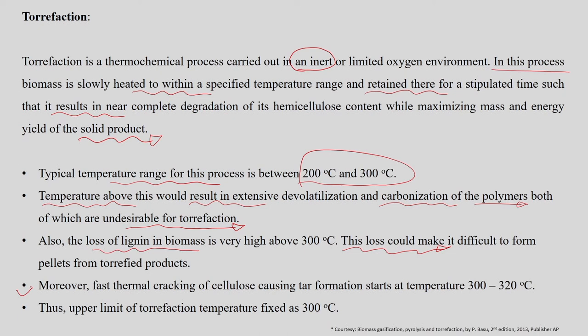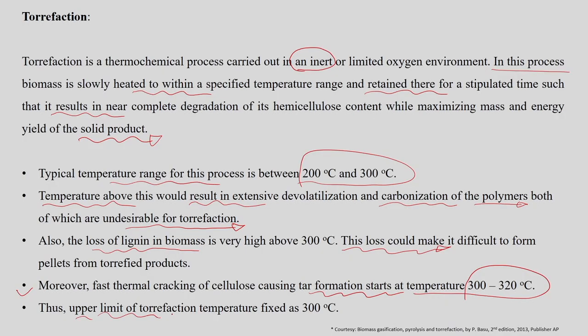Tar formation starts in the temperature range of 300 to 320°C. There is also a very narrow range for cellulose degradation, and if the temperature shoots up to a higher range, degradation of cellulose starts and tar formation begins. That is the reason the upper limit of torrefaction temperature is fixed at 300°C, giving torrefaction a small and narrow temperature range.